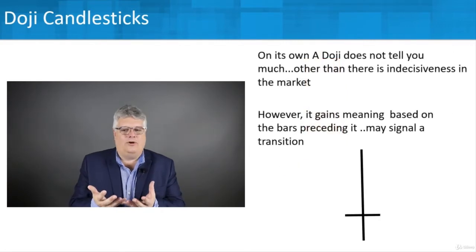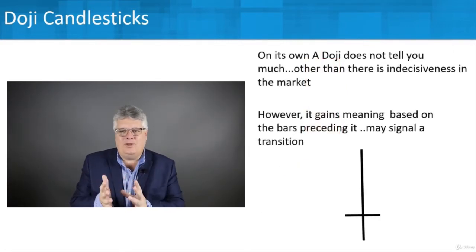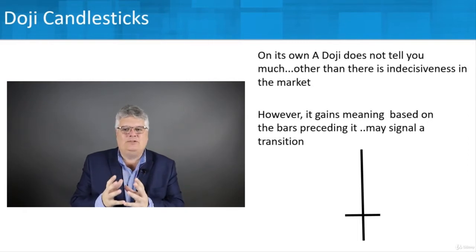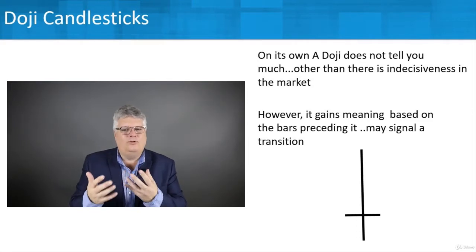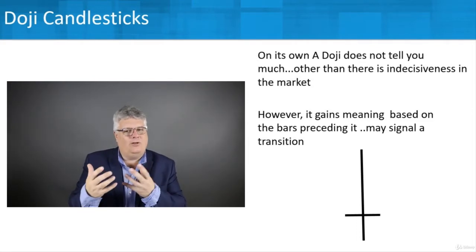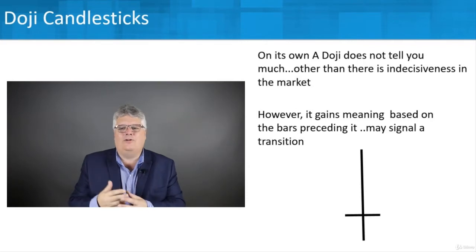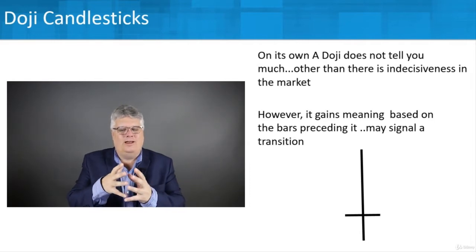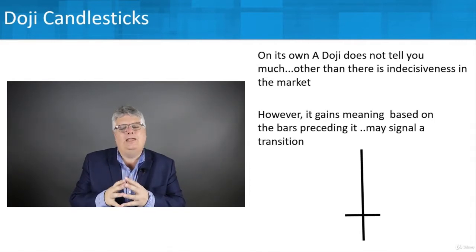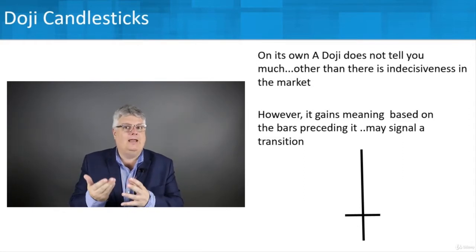On its own, a doji doesn't tell you all that much. Other than showing indecisiveness in the market — no clear direction in opens and closes — a doji really gains its meaning based on the bars preceding it. What is happening before it? A doji can help indicate that a transition may be coming, and what type of transition depends on the type of doji.